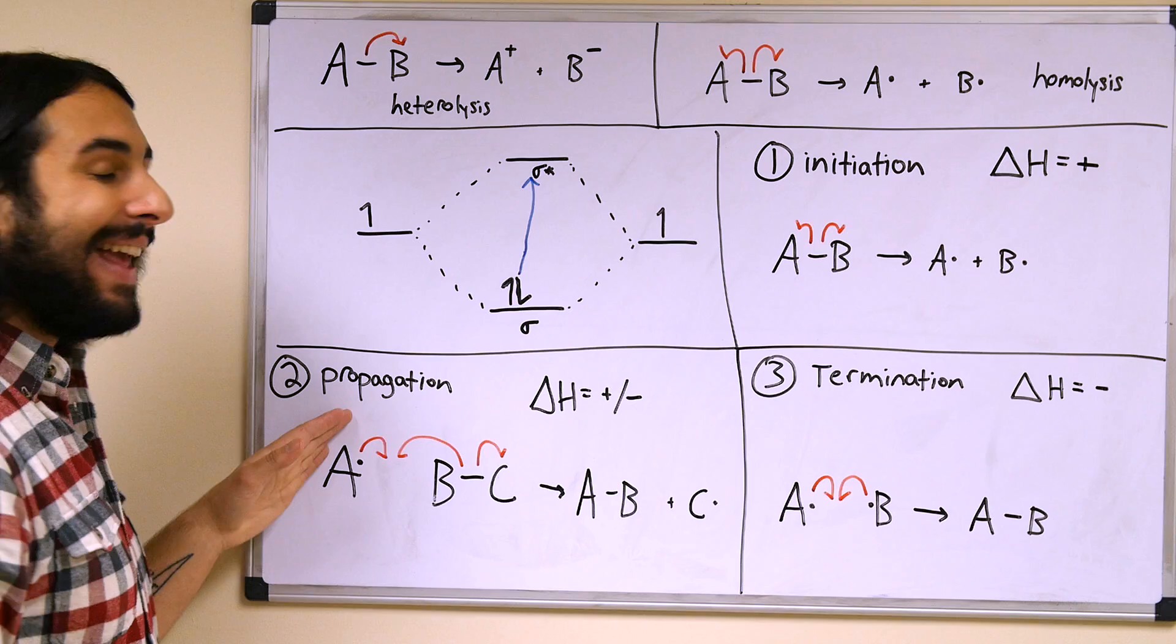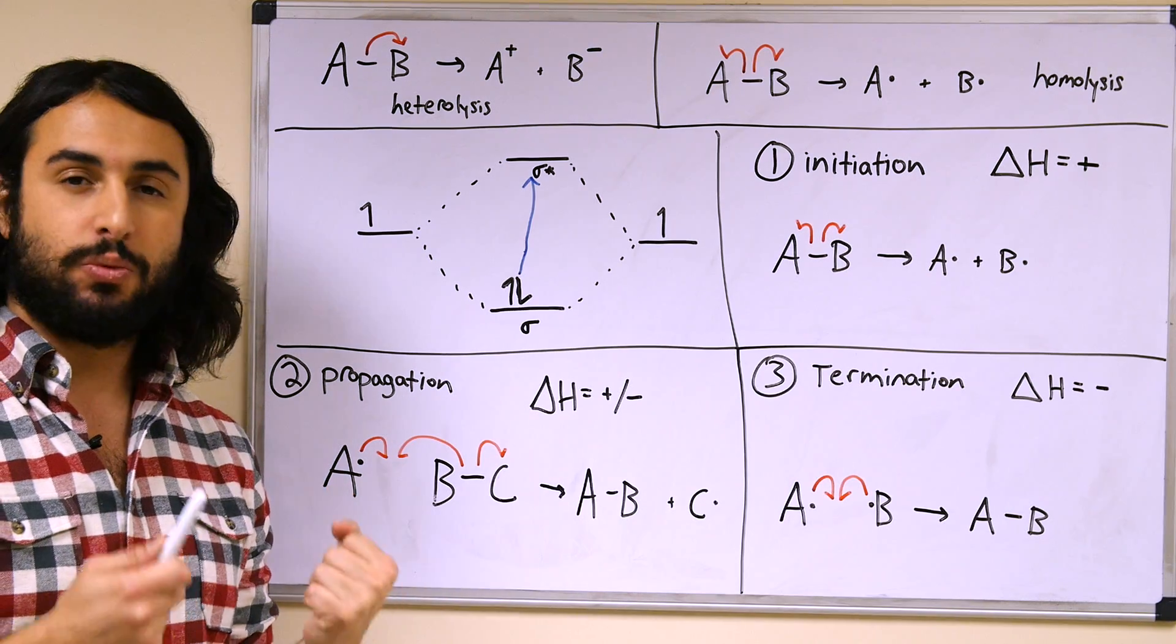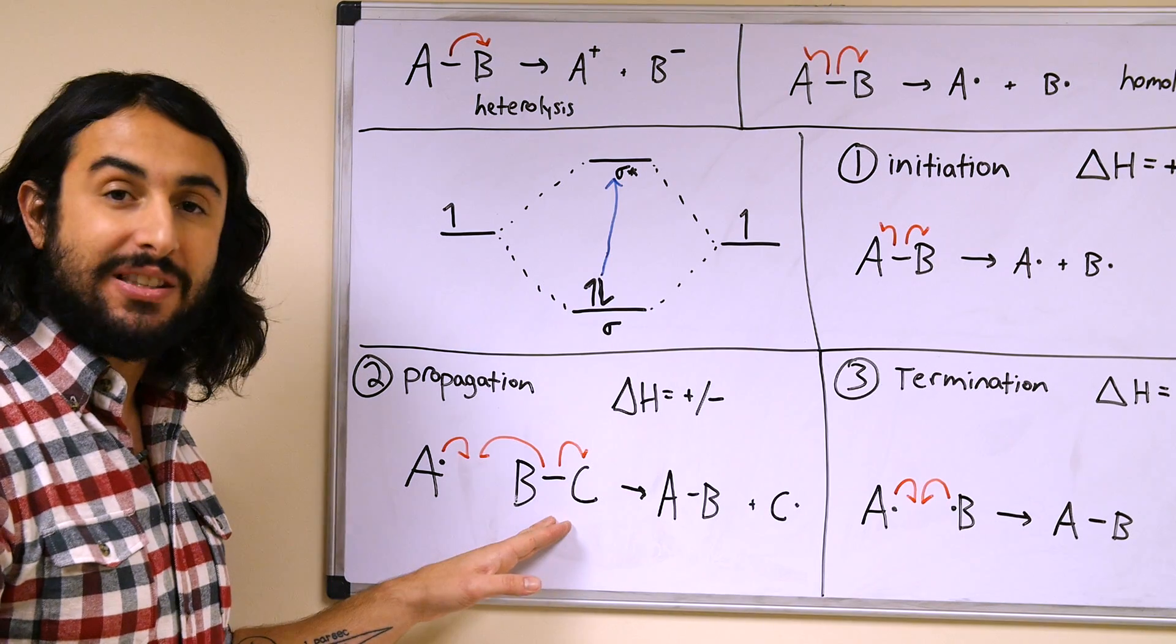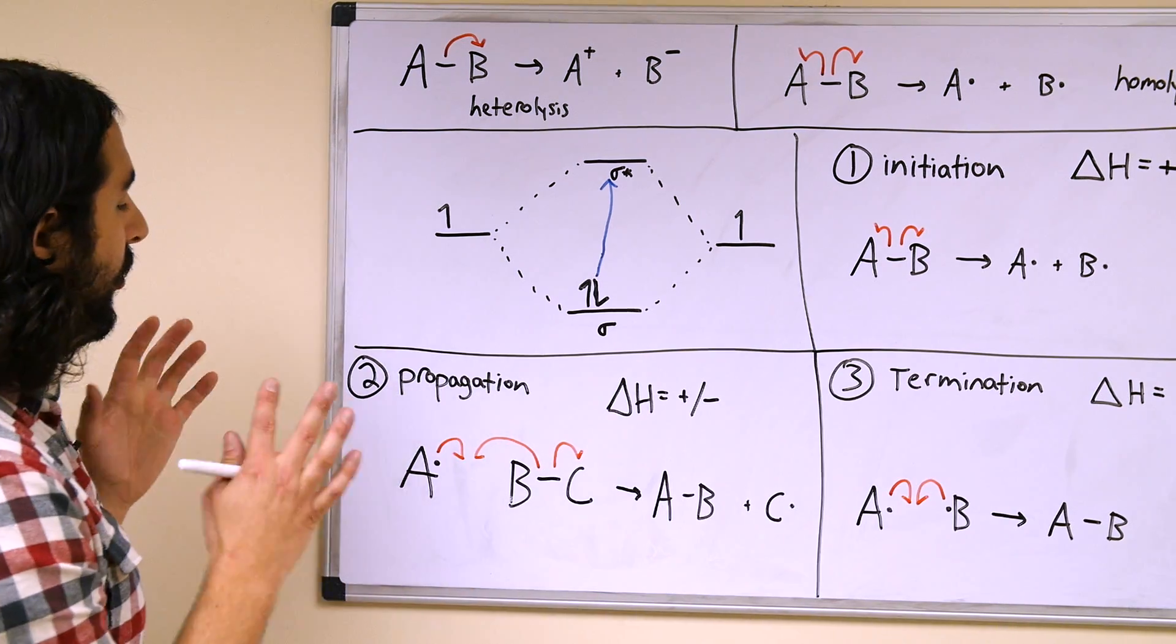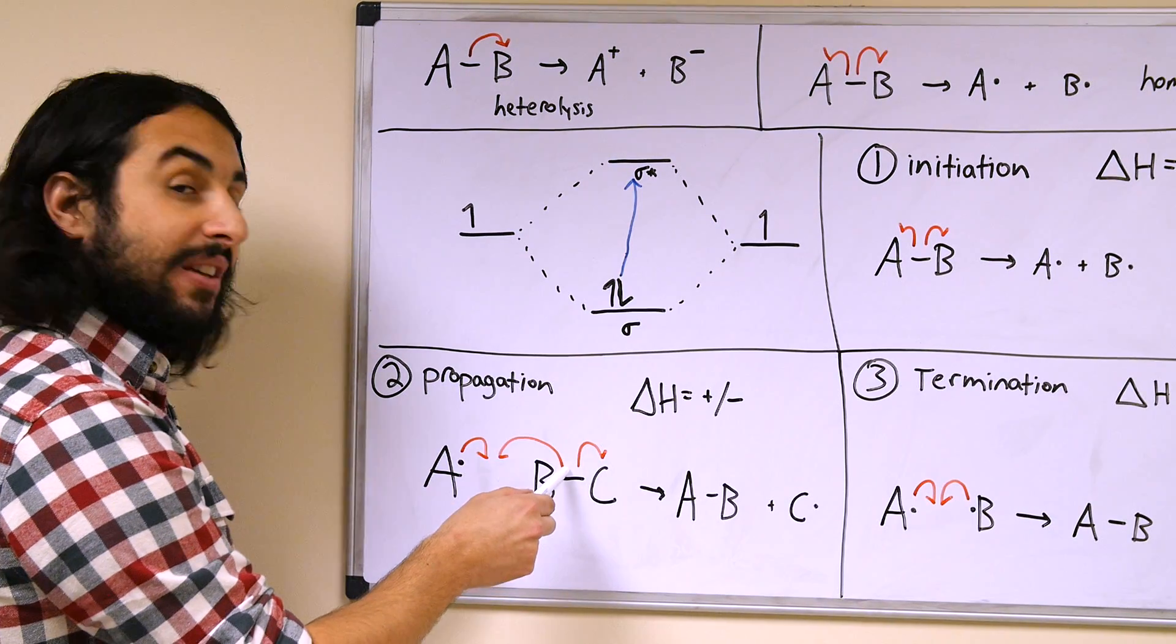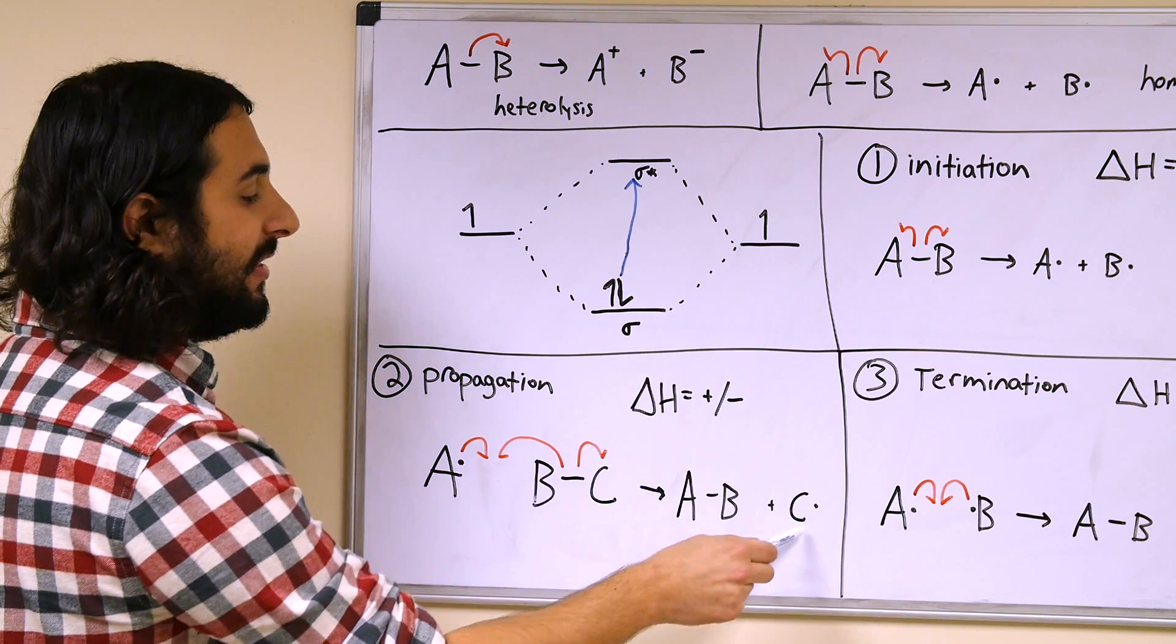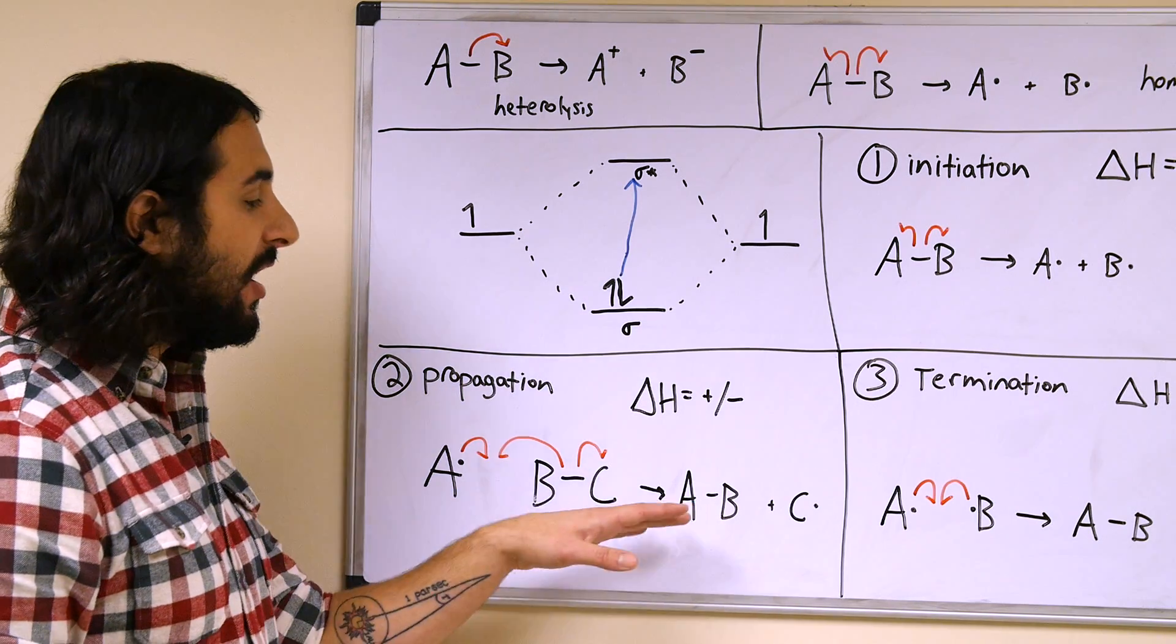Once we have radical species, we will have one or more propagation steps. Now there could be many propagation steps, there could be one propagation step—it depends on exactly which reaction mechanism we are looking at. But there will always be propagation steps, and that is a situation where one radical species and one covalent species generates a different radical species and a different covalent species. So this is basically, we're looking at A the radical—so this electron and one electron from this covalent bond are going to now form the covalent bond between A and B. The other electron in this covalent bond is staying with C to generate the other radical species. So propagation, once again: one radical species, one covalent species generating a different radical and a different covalent species.